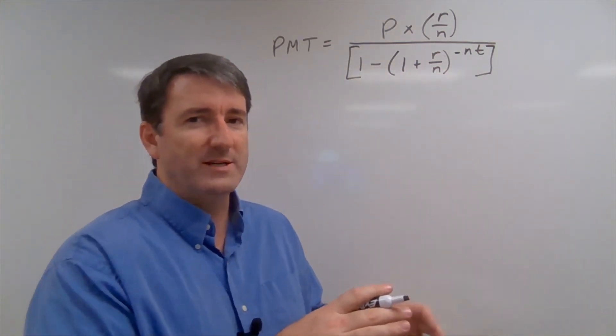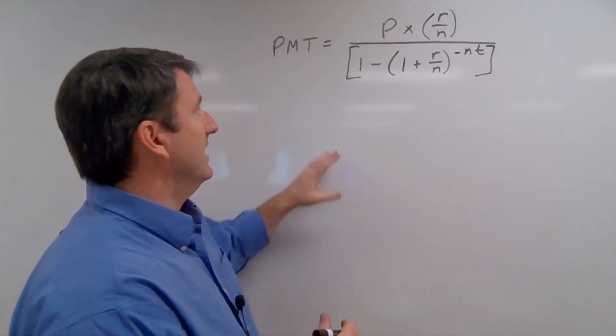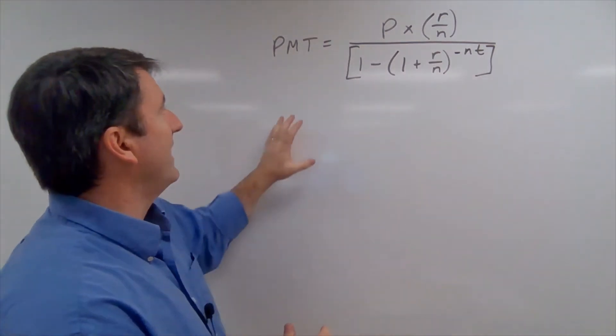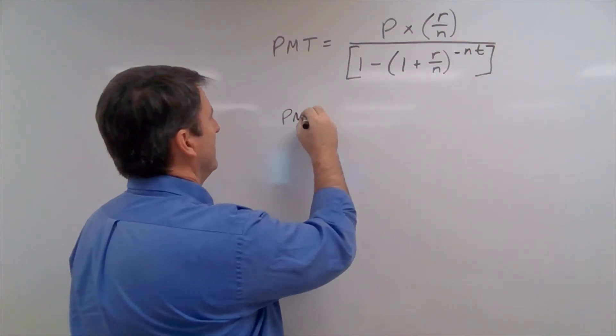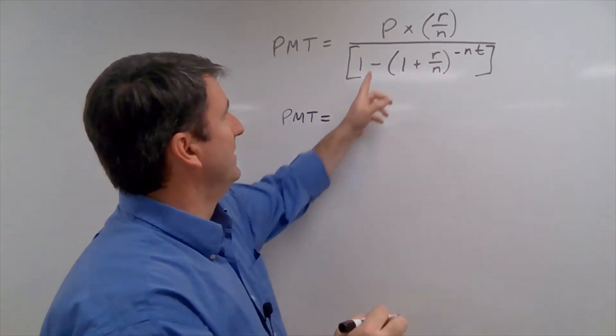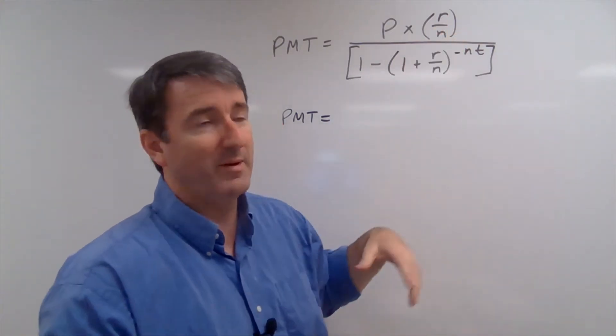We'll get to those last two questions in a minute. First let's figure out what our monthly payment is going to be. So our formula for finding a monthly payment is going to be this one. And so our monthly payment is going to be equal to the principal times our annual interest rate divided by n.